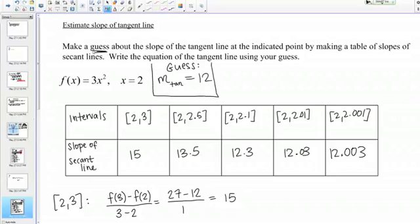The notation I've used there, m is often used to denote the slope, and I've just used a subscript of tan for tangent. I'm guessing that the slope of the tangent line is 12 in this case.